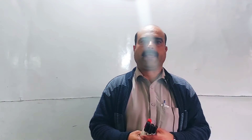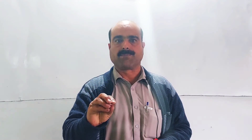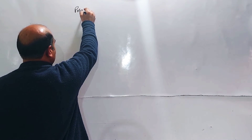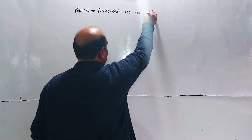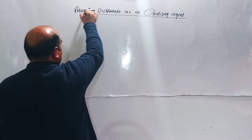Bismillahirrahmanirrahim. Dear students, assalamu alaikum. Today we have a new topic: potassium dichromate is an oxidizing agent. We will discuss two topics — potassium dichromate as an oxidizing agent in organic chemistry, and as an oxidizing agent in the titration process.